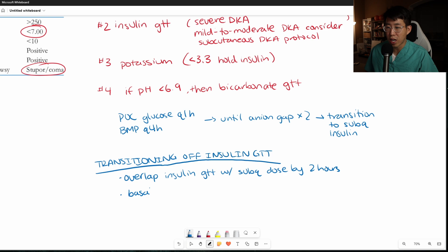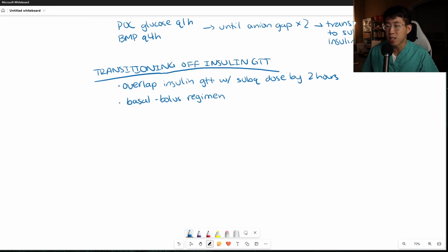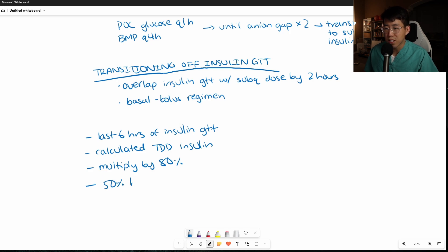And then the other thing is transitioning off of the insulin drip. We generally want to transition them to a basal bolus regimen. So the main question here is how do you calculate how much insulin to give somebody? And so the way that you actually do this is generally you're going to look at the last six hours of the insulin drip and then calculate the total daily dose of insulin, multiply by about 80% to kind of give a conservative estimate. You don't want to overshoot how much insulin you're going to be giving this person and then split this 50% into their basal dose, which is the long acting dose and 50% into short acting. So let me just give you an example. Let's say the patient's anion gap has closed twice. And now we're looking back at their last six hours on the insulin drip.